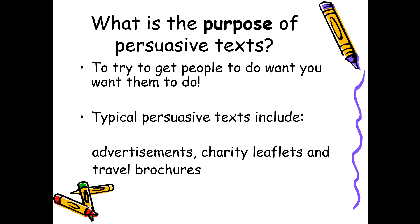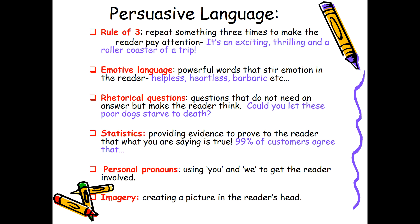Year six, I think you'll be particularly good at this because you've already done a travel brochure this year. There are different persuasive language techniques. The rule of three means you repeat something three times to make the reader pay attention — for example, 'it's an exciting, thrilling, and a roller coaster of a trip.' You could also use emotive language: powerful words that stir emotion in the reader, such as helpless, heartless, barbaric, to make people feel emotionally connected.